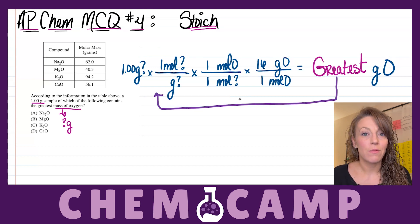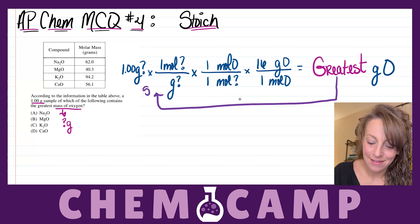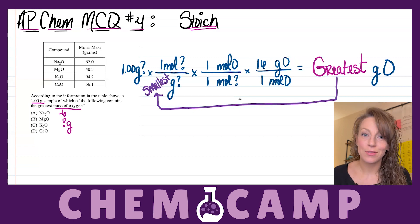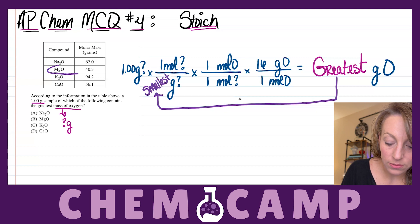Well if I want a big answer then I need a small denominator there, so I'm looking for the smallest molar mass, which means if I take a look at that table I'm looking at MgO with only 40.3 grams per mole.